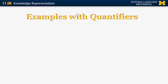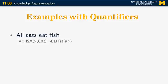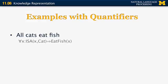Now let's look at some examples with quantifiers. Suppose we want to represent the statement 'all cats eat fish'. One way to do this is to say: for all x, if x is a cat, that implies x eats fish.